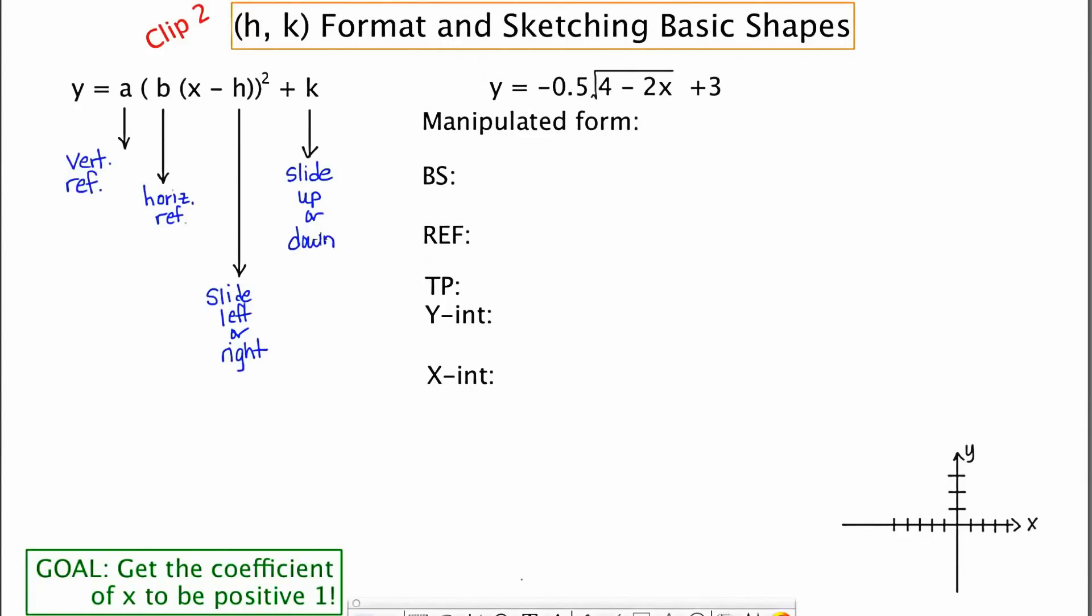Now, in this example that I'm about to show you with the square root graph, something odd happens almost from the start. And that is when you look at it, the coefficient of x is negative 2. And if you focus down here on this green box, one of your goals is to get the coefficient of x to be positive 1. Once you do that, it fits much more easily with this template. So we're going to manipulate this function so that it looks a lot more like this template over here on the left.